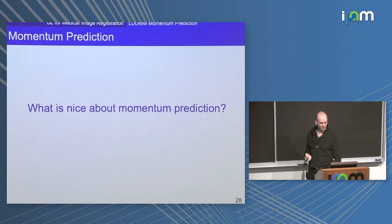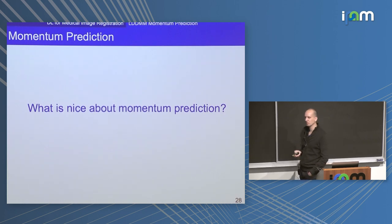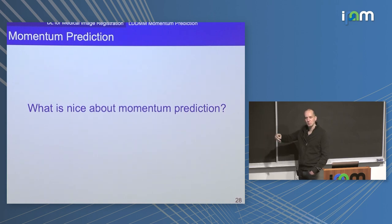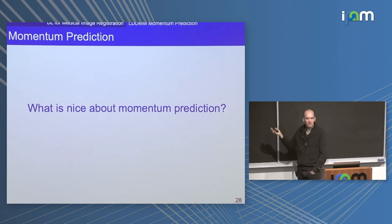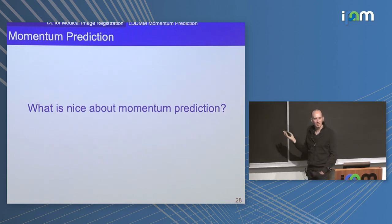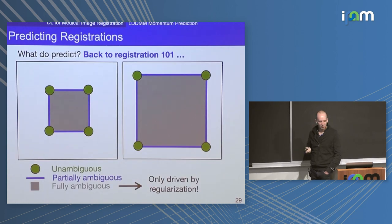Two possible reasons for imperfect results: the manual segmentations are probably not perfect and are a little bit noisy, but also these algorithms probably don't achieve perfect registration because some of these registrations are in fact difficult. So let's take a step back and think about what is nice about momentum prediction in the first place.